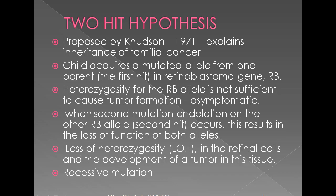We move on to the two-hit hypothesis. This was proposed by Knudson in the year 1971 to explain the development of retinoblastoma in both the familial forms of cancer and also in the sporadic forms of cancer. Retinoblastoma occurs due to mutation in the particular gene PRB. Mutation in only one allele is not enough for the development of the disease. Heterozygosity of the RB allele is not sufficient for tumor formation, and this condition is called asymptomatic.